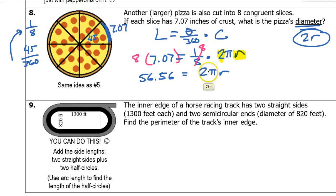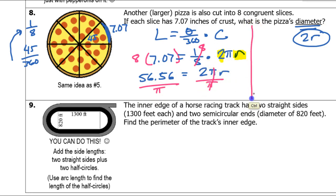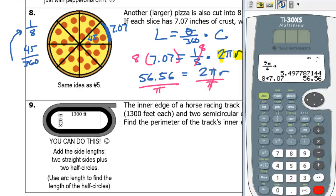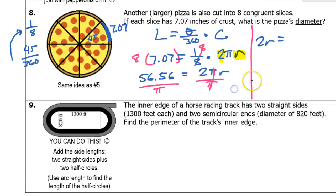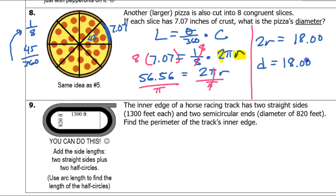So 2r equals 56.56 over π, and putting that in the calculator gives 18.00. So the diameter is 18.00 inches.